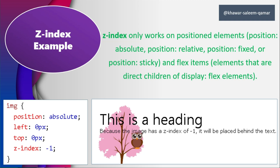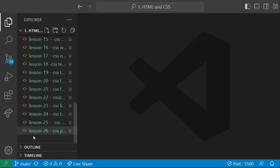The main logic behind z-index is that the element having a larger z-index would be above, and the element having a smaller z-index will go below. In this example you can see there is a heading whose z-index is greater than the z-index of the image, which is minus one. So if the heading tag has a z-index of zero and the image of the tree has a z-index of minus one, the heading would overlap the image.